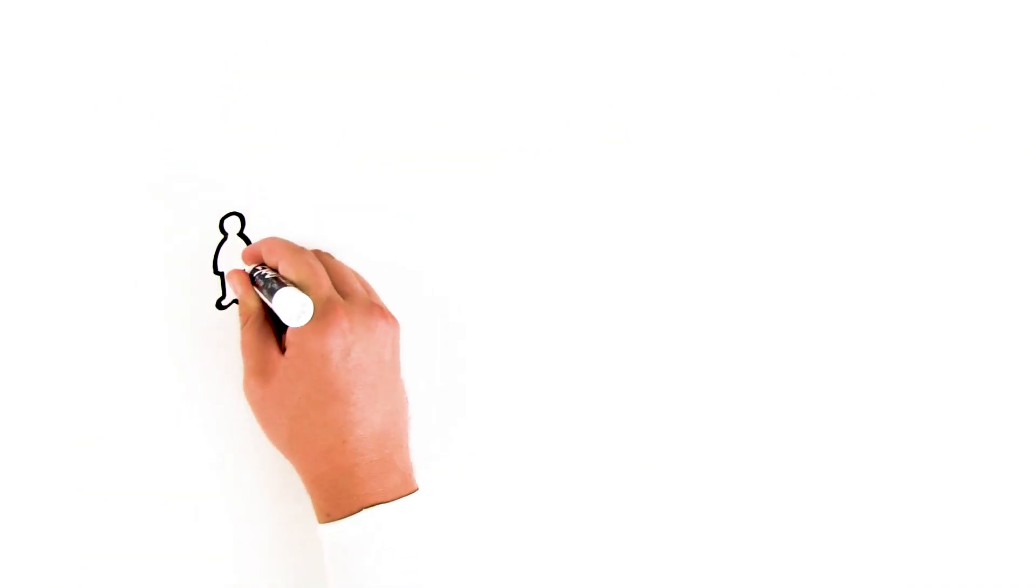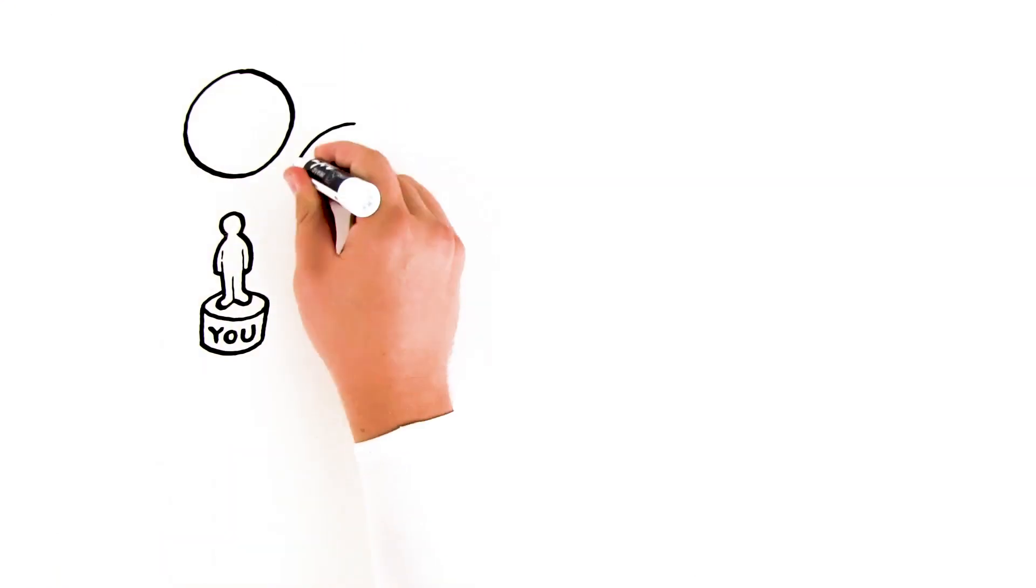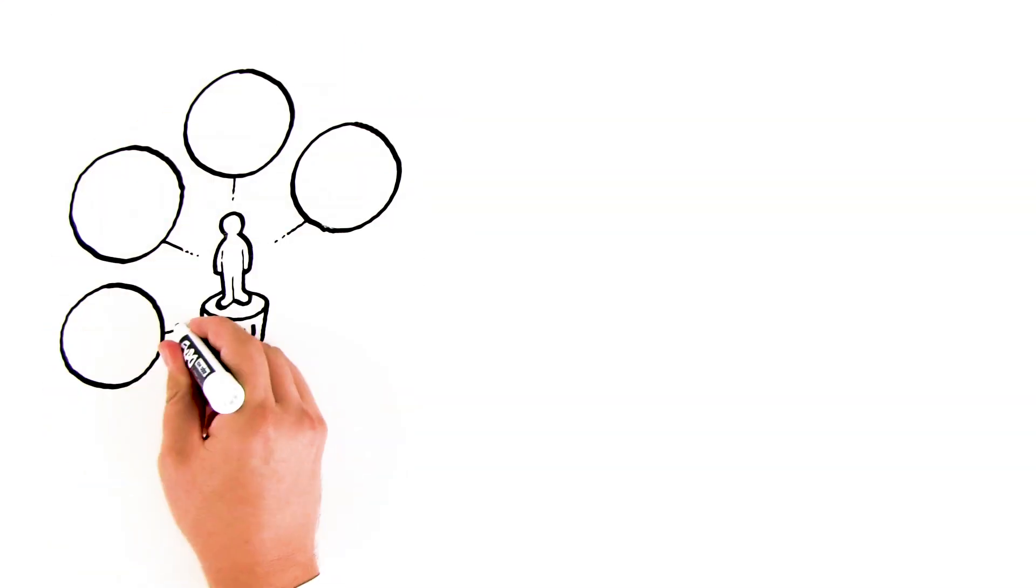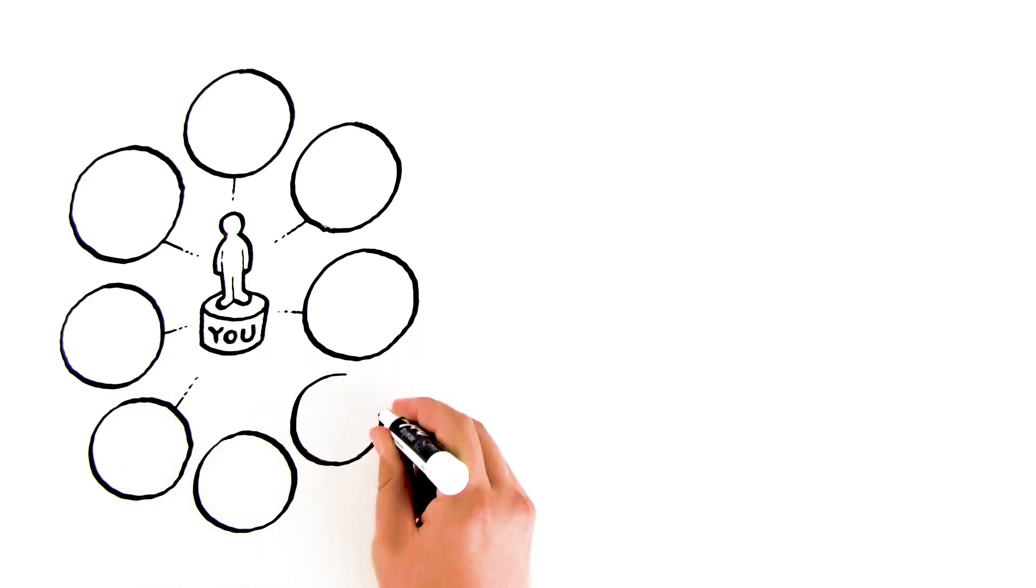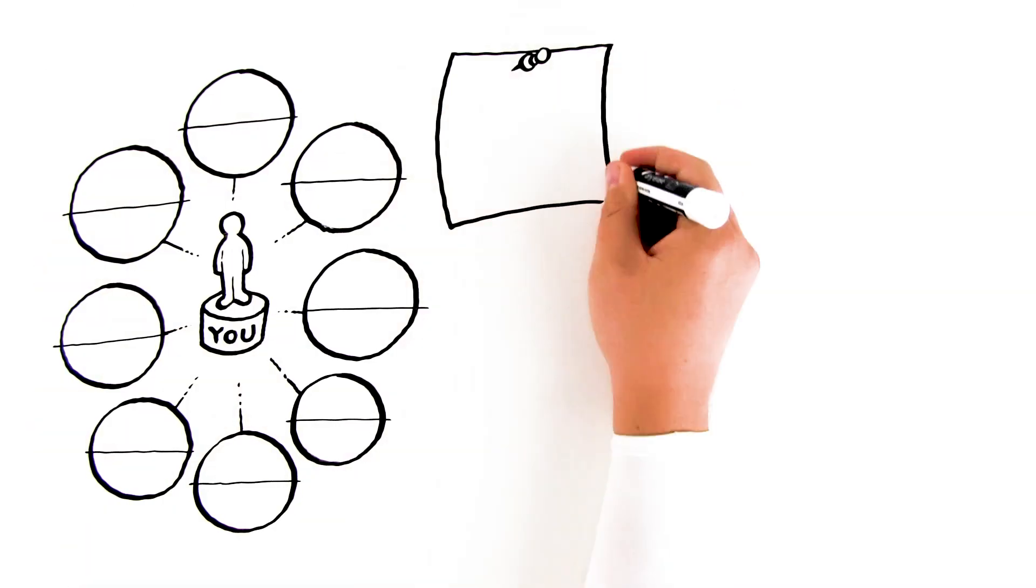So, take a sheet of paper and draw a circle in the middle. That's you. Outside of the circle, draw eight circles around it. Now draw a horizontal line through the middle of each circle and think of the eight most important people in your life.